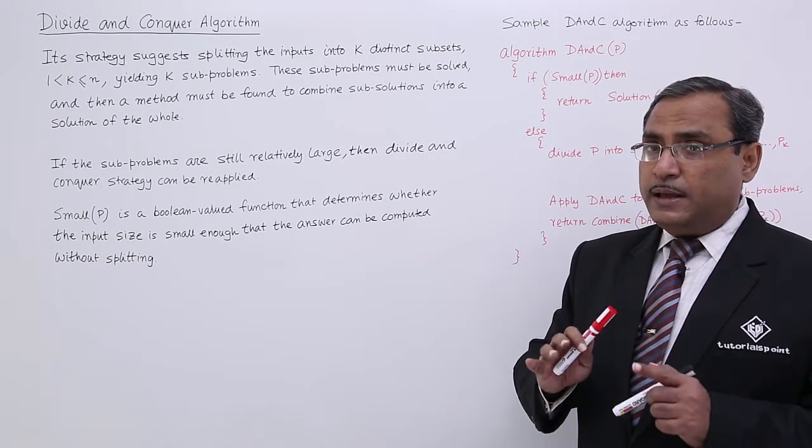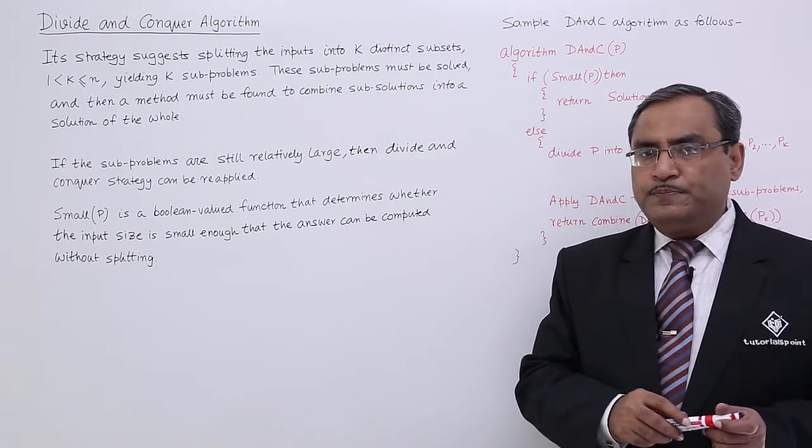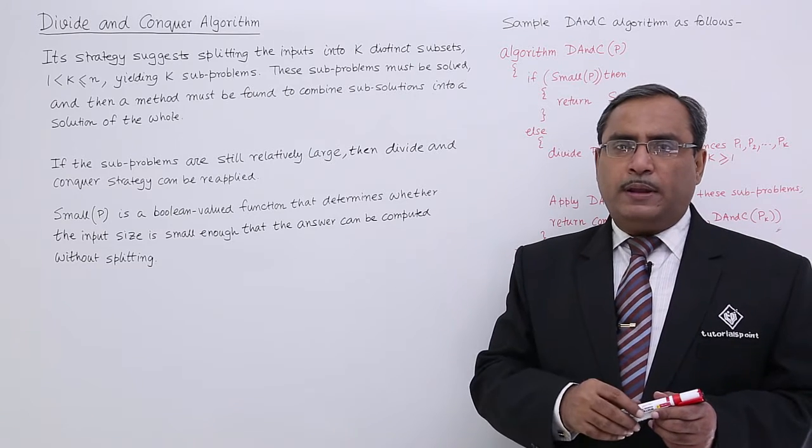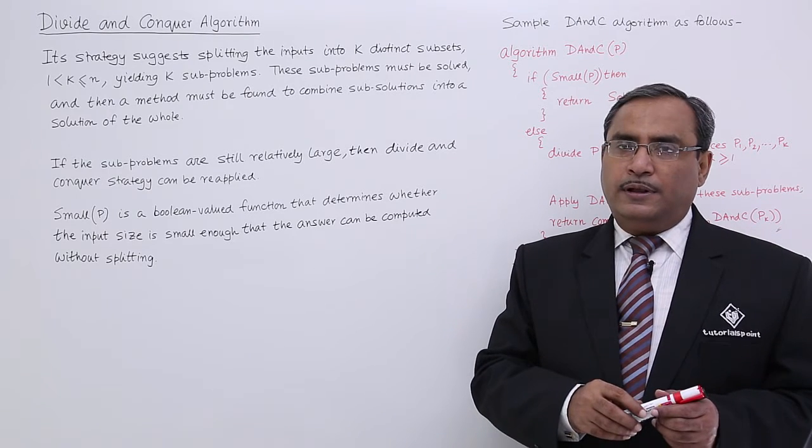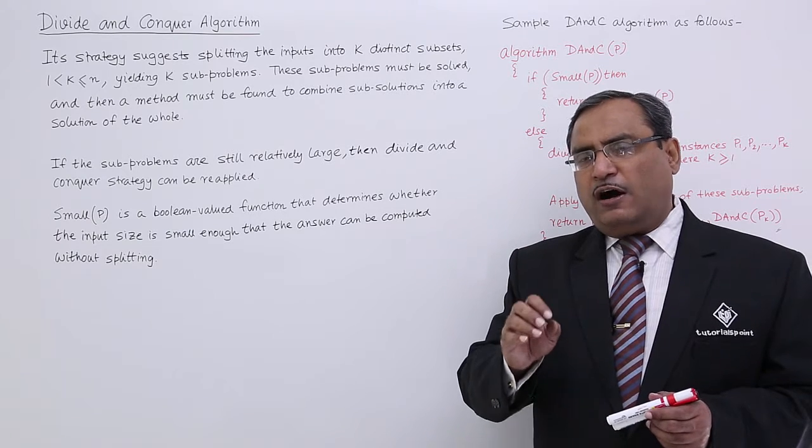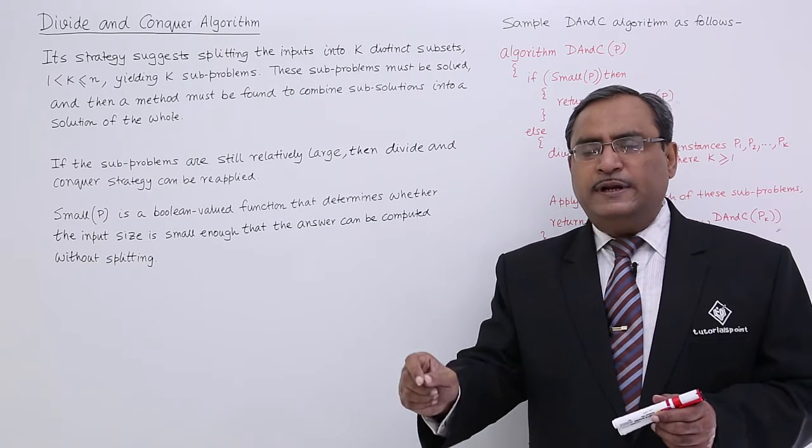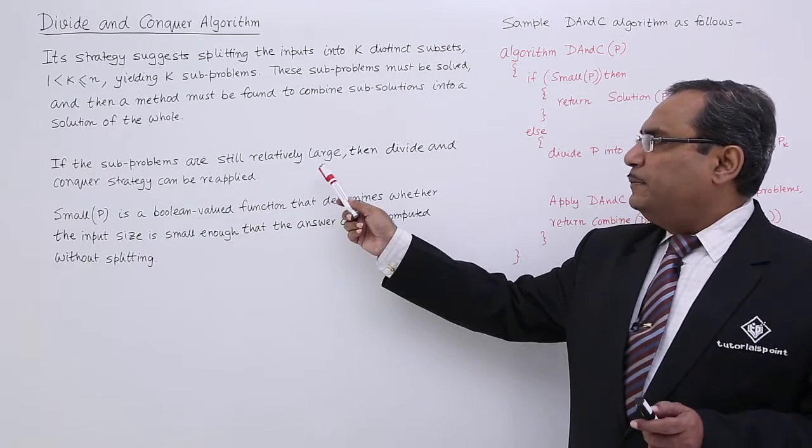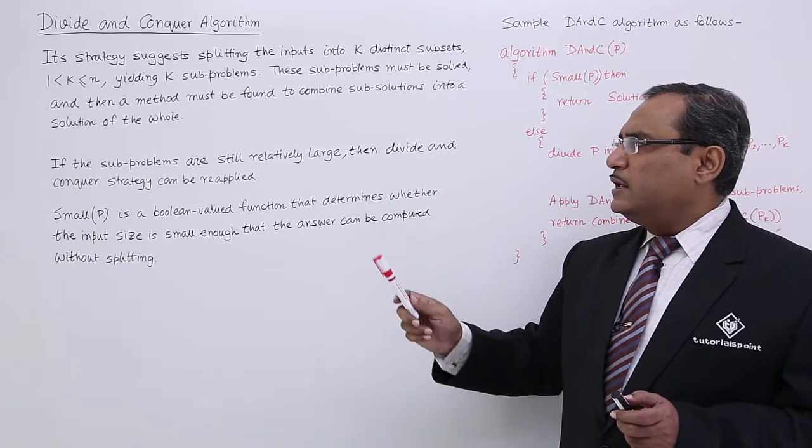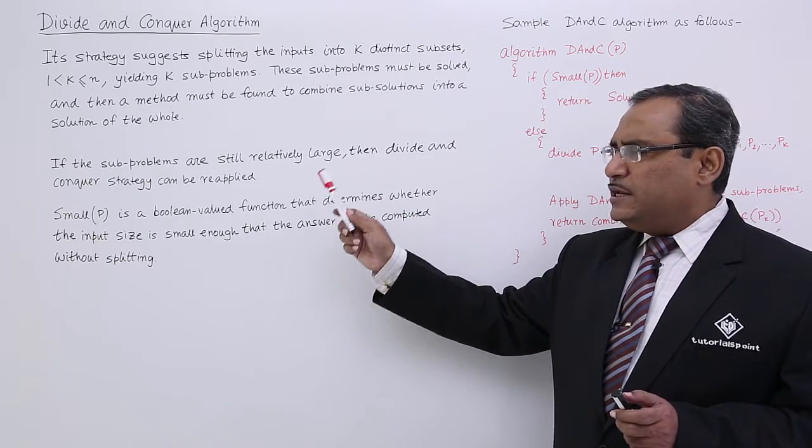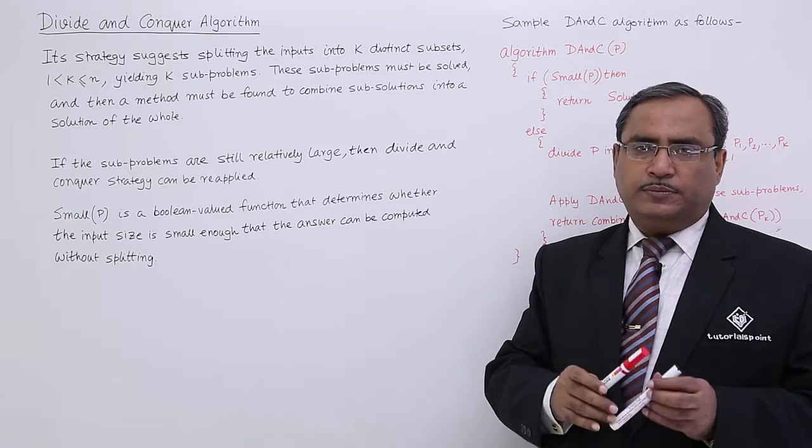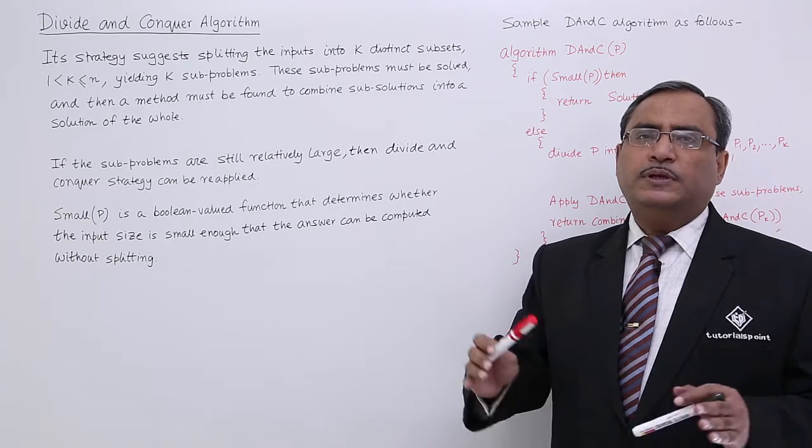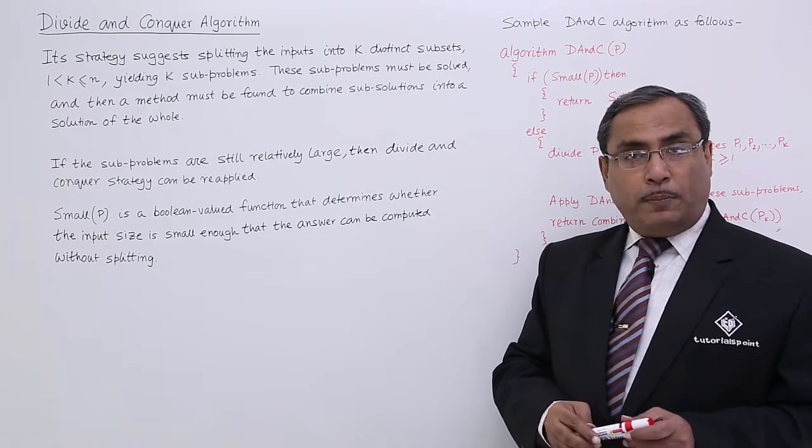That is the main theme behind this divide and conquer algorithm. But sometimes it may happen that the solution against the subproblem is not available. Then we can apply the strategy of divide and conquer on the very subproblem again. If the subproblems are still relatively large then divide and conquer strategy can be reapplied on the larger size of the subproblems to divide it into the smaller sizes of the subproblems.